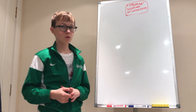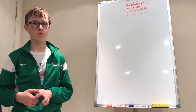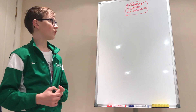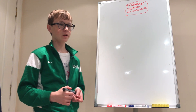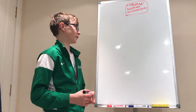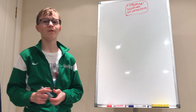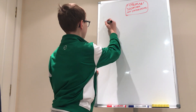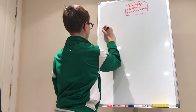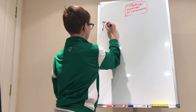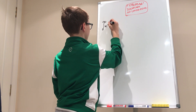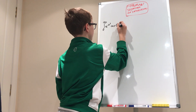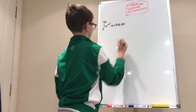Hello everybody, welcome back to another Gregorius Maths video. Today we'll be using the Feynman technique for integration to integrate a very nice integral. The integral we're going to be evaluating is the integral between 0 and infinity of e to the negative x squared times cosine of 2x dx.